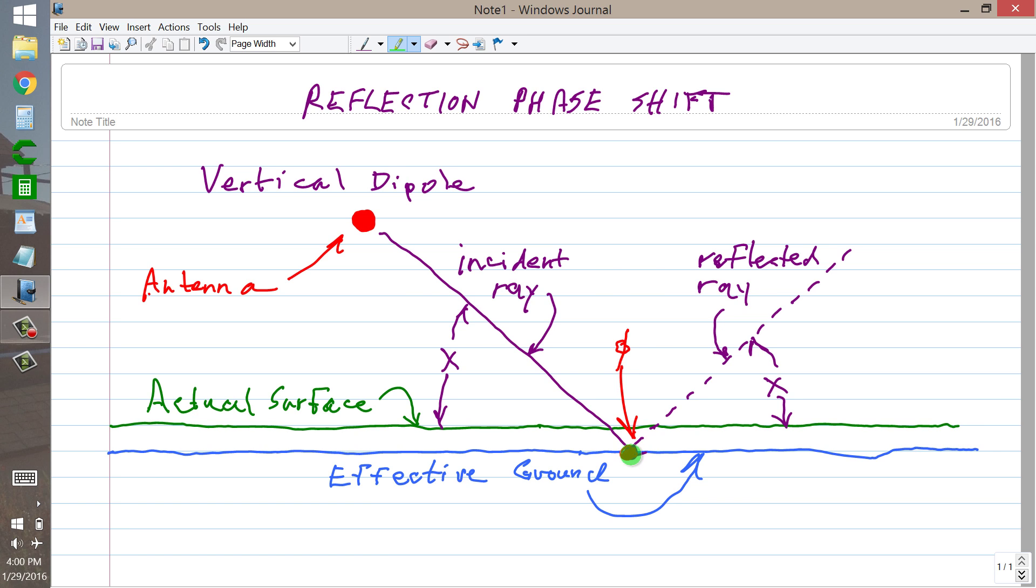The wave would come off in phase with the incident ray, so that angle, phi, equals 0 degrees in the case of a vertical dipole. In the case of a horizontal dipole, that angle is 180 degrees.